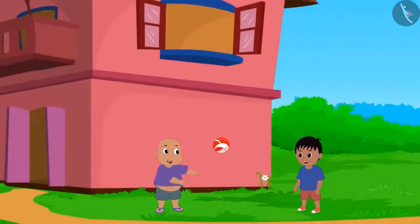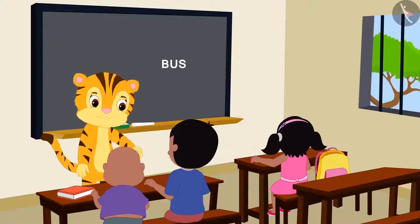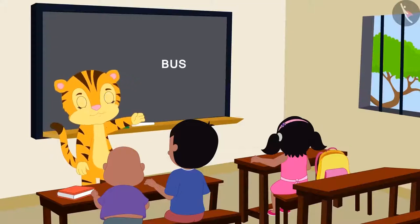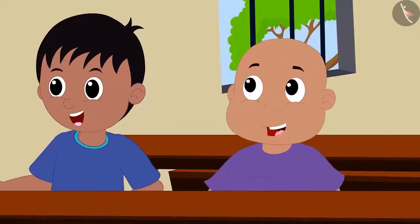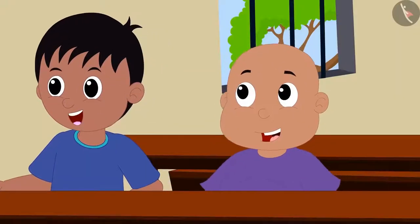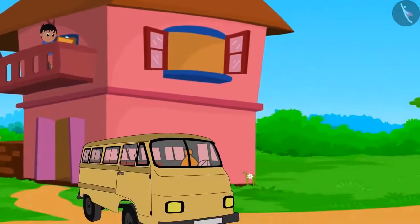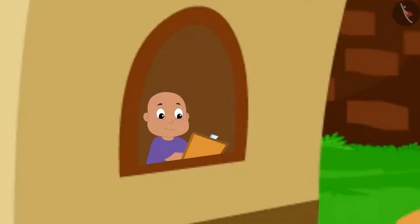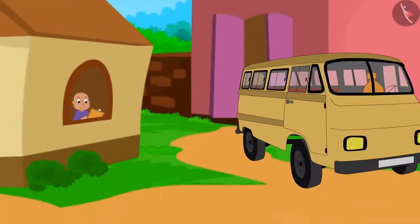Raju and Bablu are best friends. In the classroom, their teacher Mrs. Khanna asked them to draw a picture of a bus as homework. Both of them went home, looked out from the windows of their house, and began to draw the picture of a bus parked in their lane.